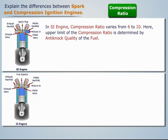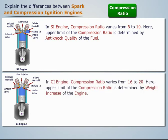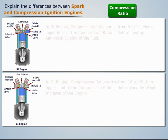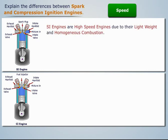In the spark ignition engine, the compression ratio varies from 6 to 10; here the upper limit of the compression ratio is determined by the anti-knock quality of the fuel. Whereas, in the compression ignition engine, the compression ratio varies from 16 to 20; here the upper limit of the compression ratio is determined by the weight increase of the engine.